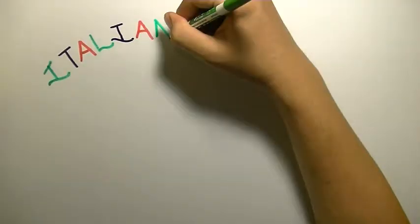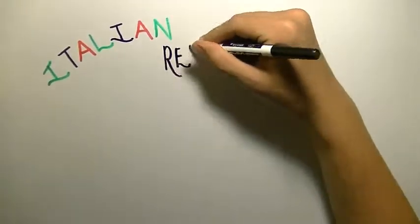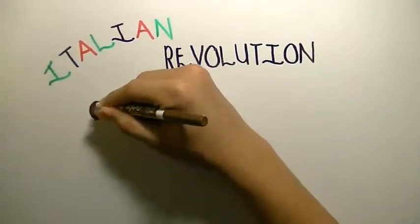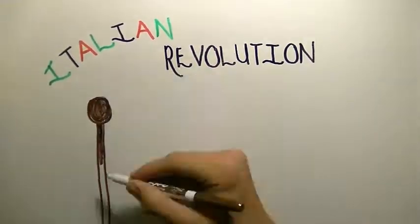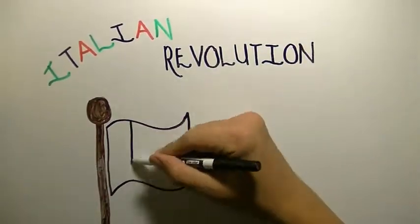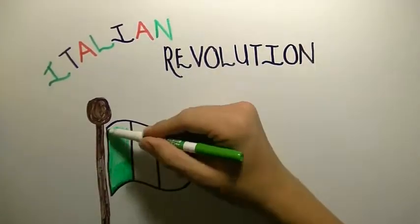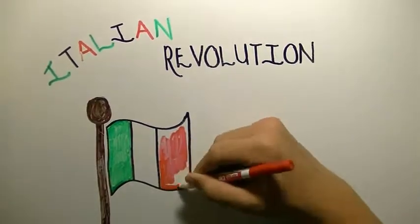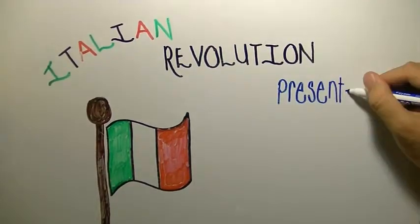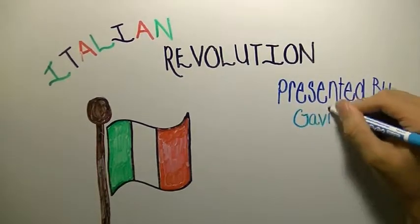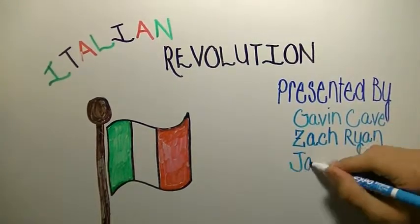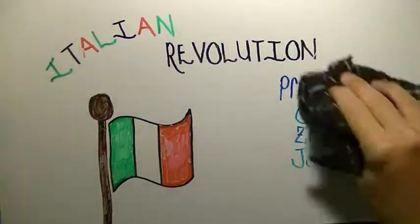The Italian Revolution is also known as the Italian Unification, because its main purpose was to unify the states on the Italian peninsula into one country. To achieve unification, they had to defeat the large powers that controlled parts of Italy. The people living in Italian states wanted a singular strong government and culture. The revolution led to a unified Italy that was stronger than ever before.